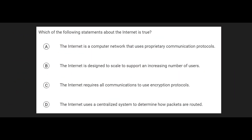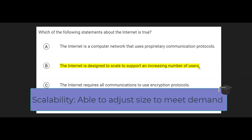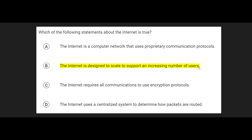This question is asking about which statements about the Internet are true. The answer is B: the Internet is designed to scale to support an increasing number of users. This is true — it's called scalability. Scalability means that something is able to increase in size to meet an increase in demand. The Internet is designed to scale to increasing usage.